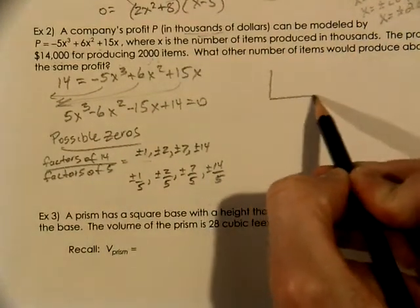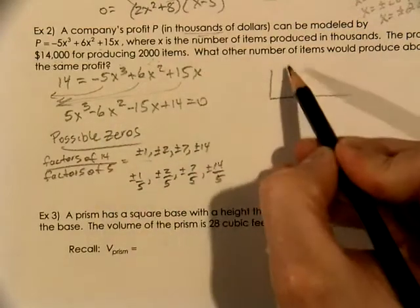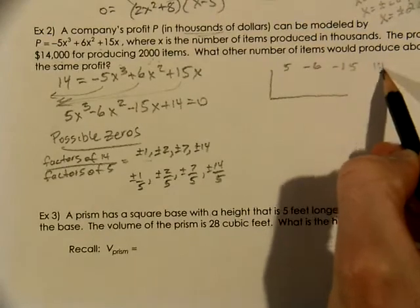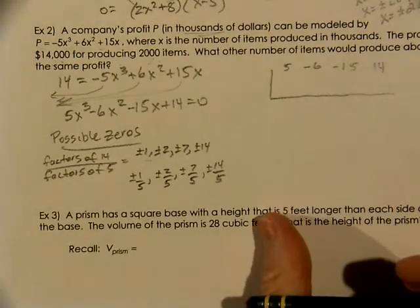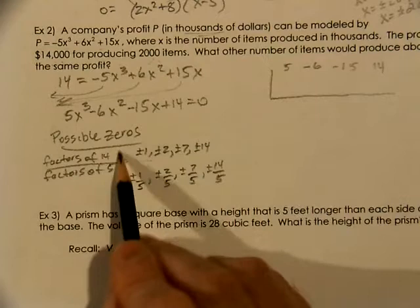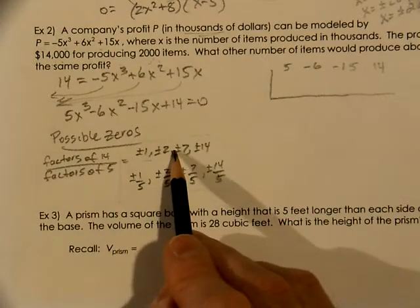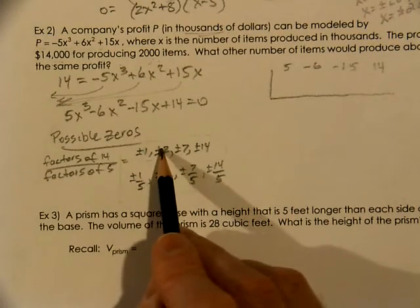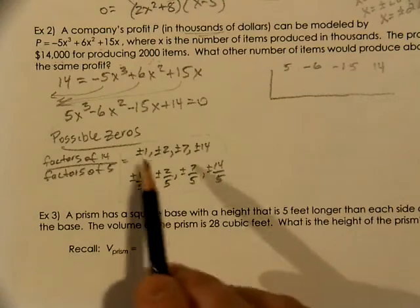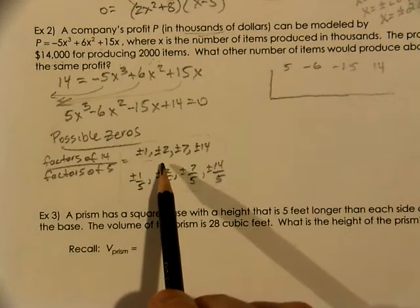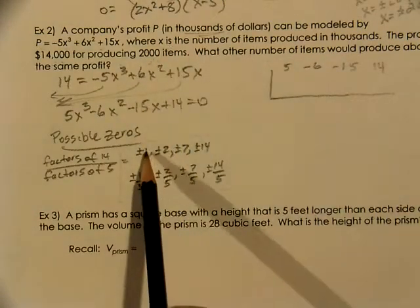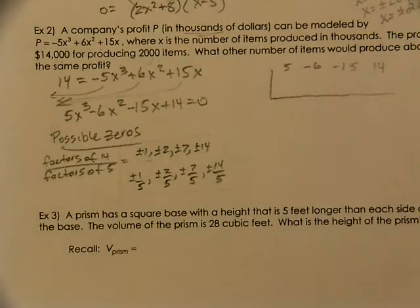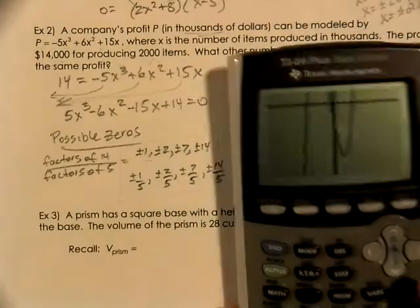So if we were going to start synthetic using our 5, negative 6, negative 15, and 14, it would be best to start trying with these numbers. No need to try 3 or 4 or 5 or 6, but trying numbers like 1 or negative 1, 2, or negative 2 would make the most sense. In this case, since we're talking about the number of items, it would probably be a positive number. Help lead you to the right answer.